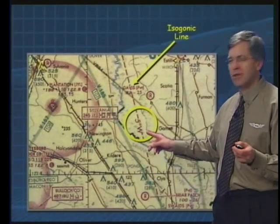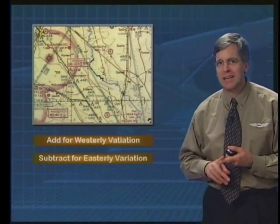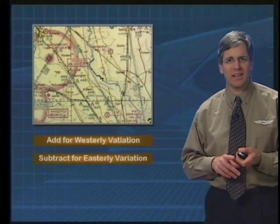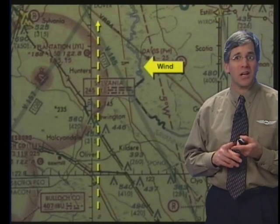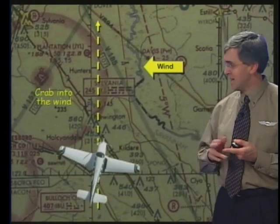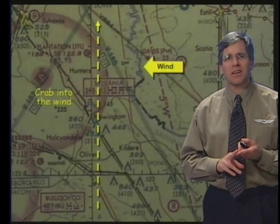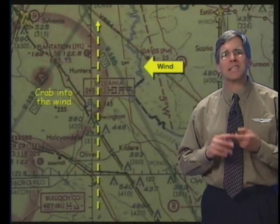Here we have five degrees west. Westerly variation must be added to the true course or true heading to get the magnetic course or heading. Easterly variation, on the other hand, must be subtracted from the true course or true heading to get magnetic course or magnetic heading. To determine the true heading required to fly a desired true course, you have to crab the airplane into the wind — and this airplane right here you can see is crabbing into the wind. If the wind is from the left, you must subtract the wind correction angle. If the wind is from the right, you must add the correction.